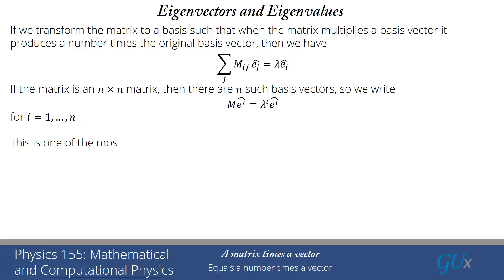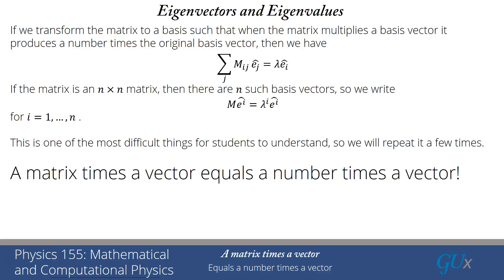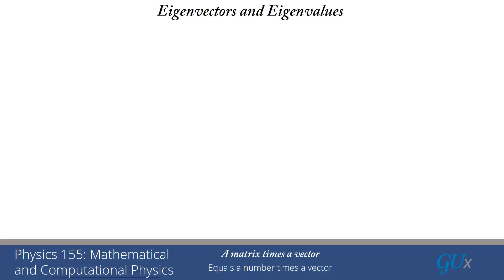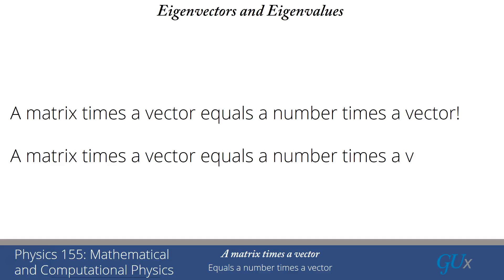This is one of the most difficult things for students to understand, so we're going to repeat it: a matrix times a vector equals a number times a vector. A matrix times a vector equals a number times a vector. Please remember that — really important.